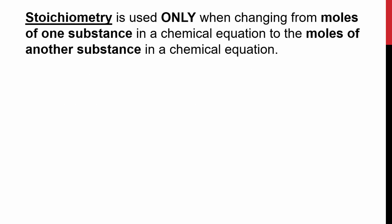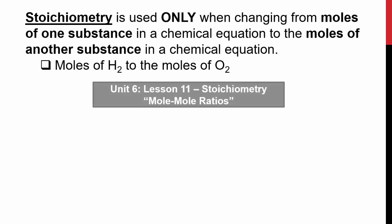Now, stoichiometry is only used for changing moles of one substance in a chemical equation to the moles of another substance in a chemical equation. So if you want to convert moles of H2 to moles of O2, you would use a mole to mole ratio in stoichiometry. If you have forgotten, please go back to this video.